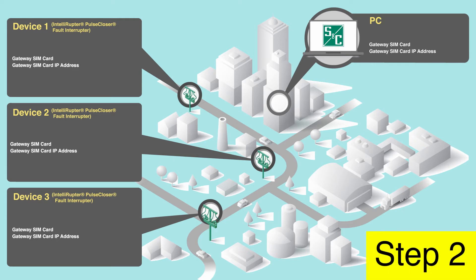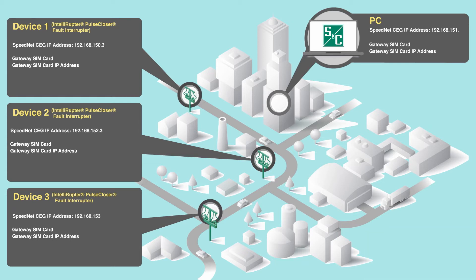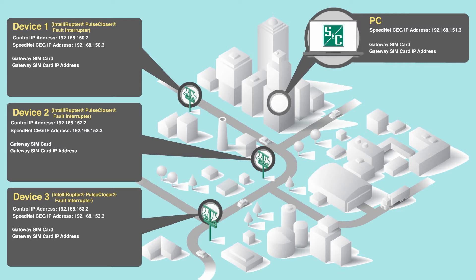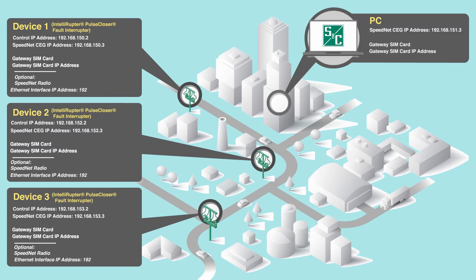Step 2: For each gateway to be used on the cellular network, select a unique IP address. Step 3: Because Intelliruptor Pulse Closer Fault Interrupters have their gateways factory installed and wired, use the subnet of the gateway's IP address to assign a unique IP address to each Intelliruptor Fault Interrupter. Optionally, when using the cellular network in conjunction with a Speednet radio network, use the subnet to assign a unique IP address to each radio.